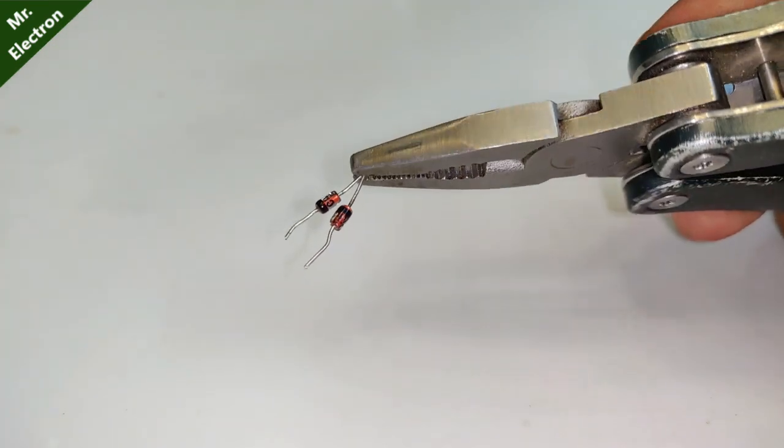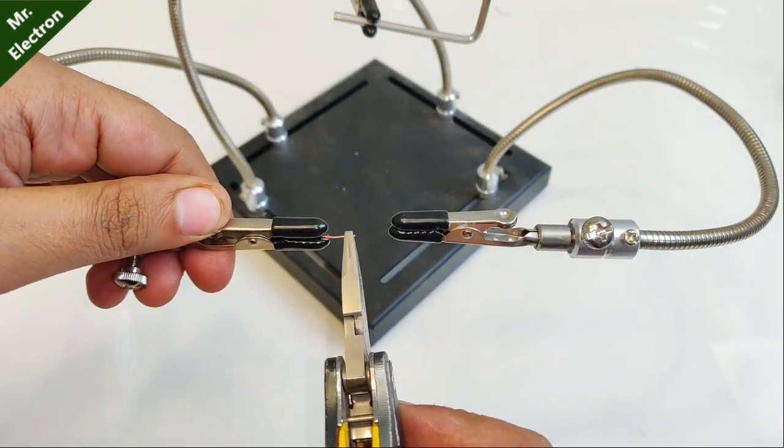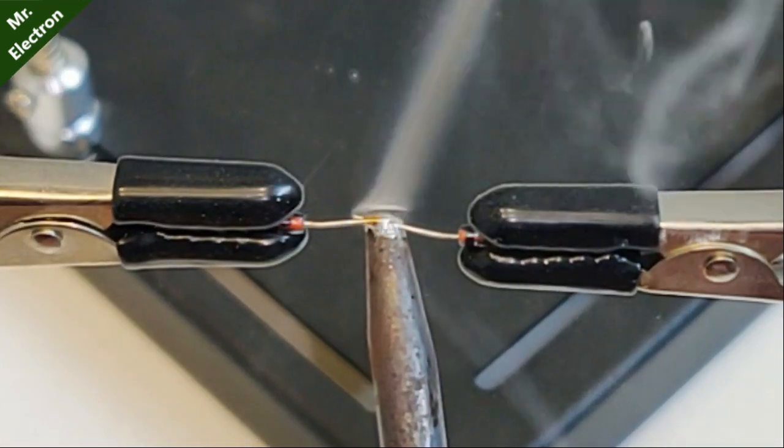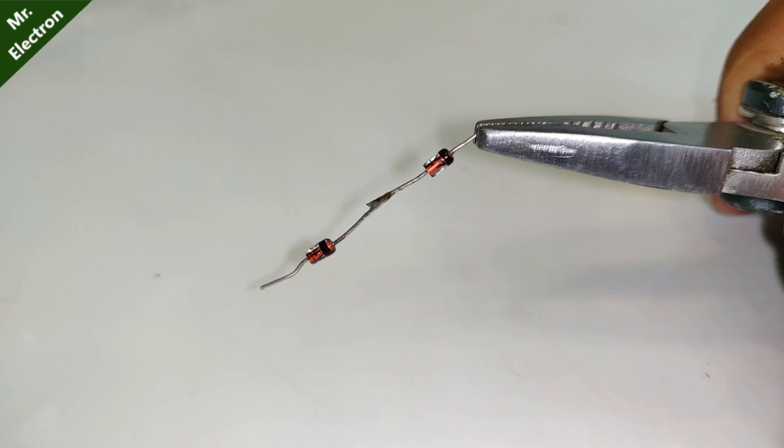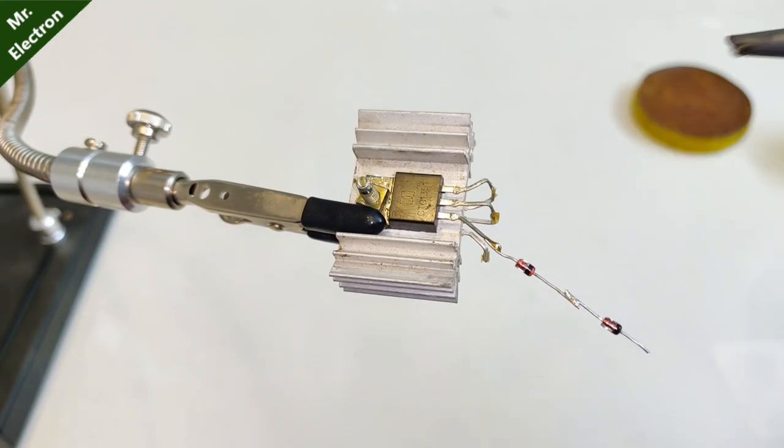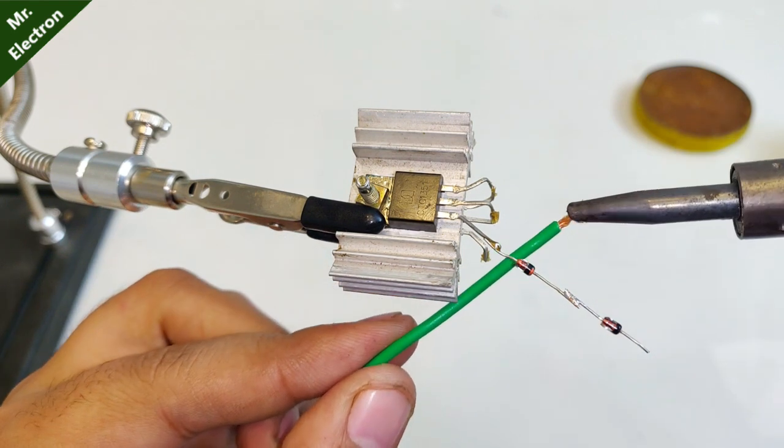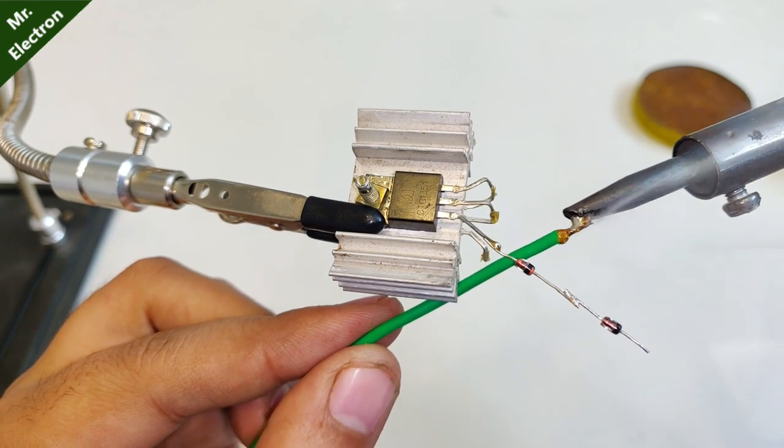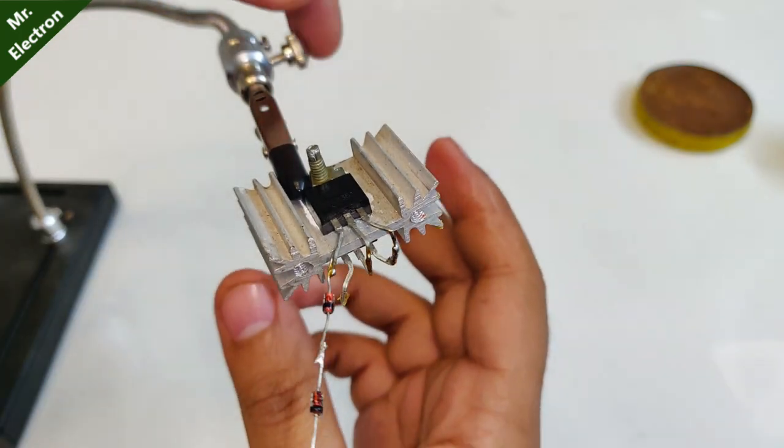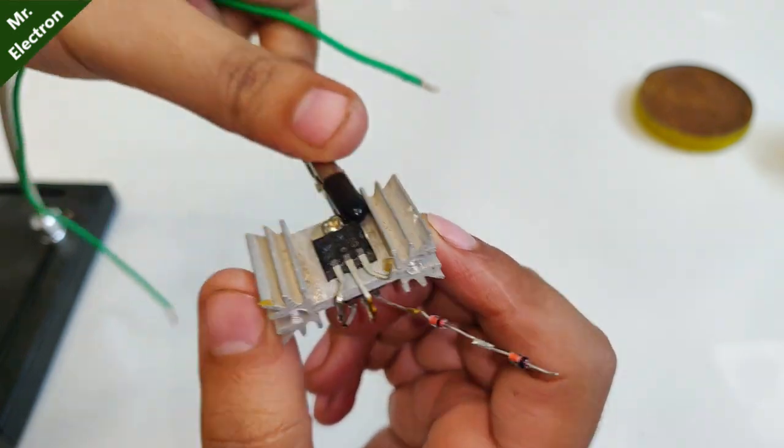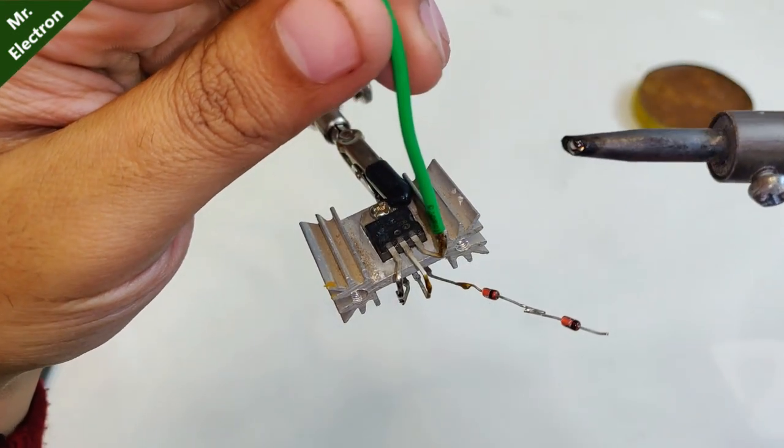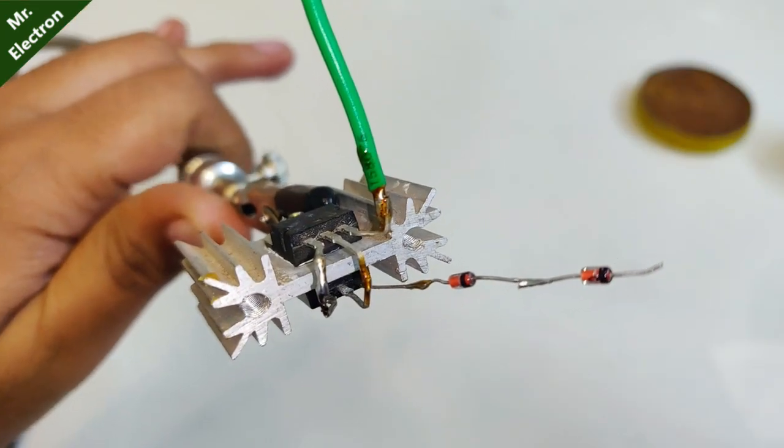After that, connect the two Zener diodes in series. One Zener diode is at 1.8 volts, so if we connect two of them together in series, it's going to be 3.6 volts DC. Now take the positive end of the Zener diode and connect it to the base terminal of the 1351 power transistor. Now solder the base of 1309 power transistor to the emitter of 1351 power transistor. After that, take a wire and connect it to the emitter terminal of 1309 power transistor.